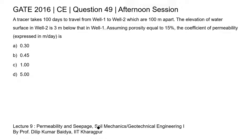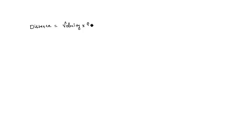A tracer takes 100 days to travel from well 1 to well 2, which are 100 meters apart. Using distance equals velocity times time, where the distance is 100 meters and time is 100 days, we can solve for the seepage velocity.